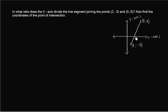Now we have to find in what ratio the x-axis divides the segment joining 5 comma 6 and 2 comma minus 3. Let it divide in the ratio m1 is to m2. We also have to find the coordinates of the point of intersection. So let's take this intersection point on the x-axis as x comma 0.